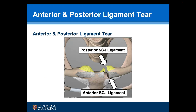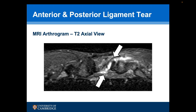Where both the anterior and posterior ligaments have been torn, these are actually irreparable and so reconstruction is required. This is an MRI arthrogram — an axial view — showing leakage of the dye both anteriorly and posteriorly, confirming a tear to both the anterior and posterior ligaments.